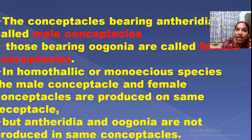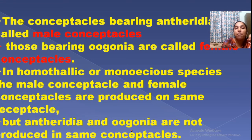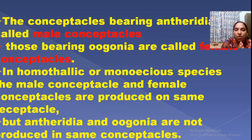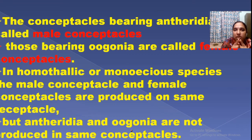A conceptacle bearing antheridia is a male conceptacle, and one bearing oogonia is a female conceptacle. If Sargassum is homothallic or monoecious, both male and female conceptacles are present on a single plant. If they are produced on different plants, that is dioecious.